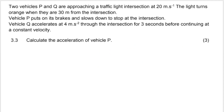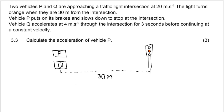My next question requires me to calculate the acceleration of vehicle P. Two vehicles approach a traffic light intersection at 20 meters per second. The light turns orange when they're 30 meters from the intersection. Vehicle P puts on its brakes — it's slowing down to stop at the intersection. So by the time car P reaches the traffic light, its final velocity will be zero.